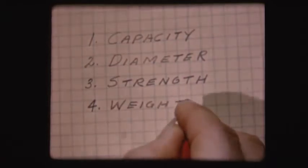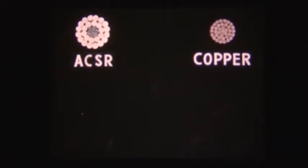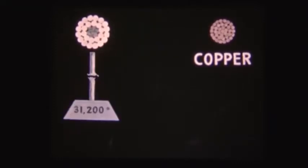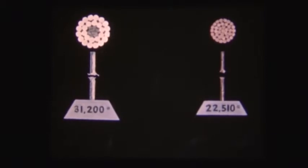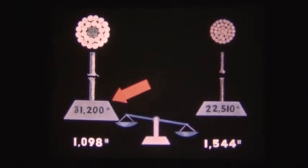An important one is the ratio between strength and weight. Let's go back to our examples of ACSR and copper of equal carrying capacity. We find that the ACSR has a breaking strength of 31,200 pounds, as compared with 22,510 pounds for the non-reinforced copper. The weight of a thousand feet of ACSR in this particular size and design is 1,098 pounds, compared with 1,544 pounds for the same length of the equivalent copper. In other words, the ACSR in this particular case is both stronger and lighter than the smaller diametered copper of the same carrying capacity.